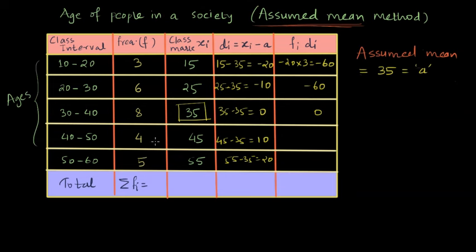And 10 times 4, which is 40 and then 20 times 5, which is 100. So in the next step, what we do is then we sum up the values in the last column, fi di.